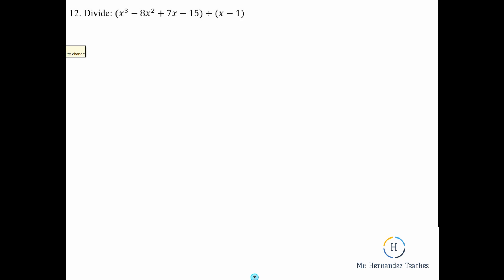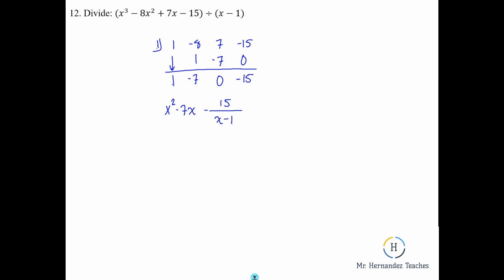Another dividing problem — you need to know how to do synthetic division; it will be on the test. Put 1 in the corner, write the coefficients: 1, negative 8, 7, negative 15. Bring the 1 down. 1 times 1 is 1; negative 8 plus 1 is negative 7; 1 times negative 7 is negative 7; 7 minus 7 is 0; 1 times 0 is 0; negative 15 plus 0 is negative 15. Writing in polynomial form, one degree lower than 3 is squared: x squared minus 7x, with no constant since that's 0, minus 15 over x minus 1.